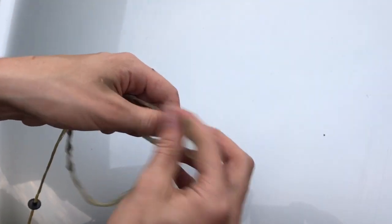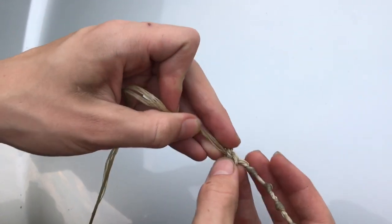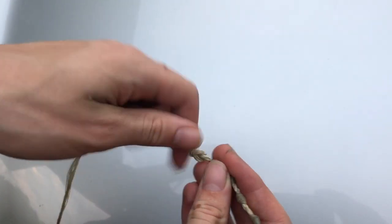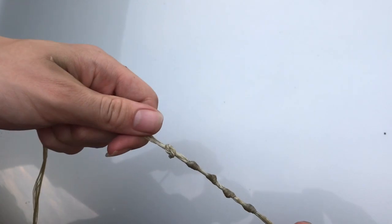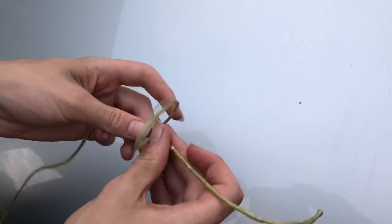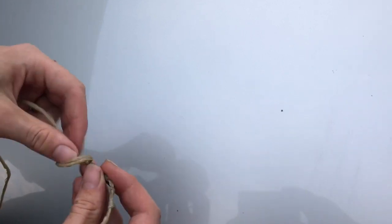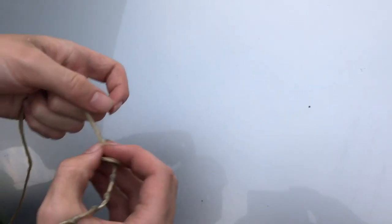Just a simple overhand knot will work, and I try to keep the knots equally spaced. They don't need to be equally spaced; it just looks a little better. Now take the other side of the string and place a knot there as well. Notice that this string is treated with natural beeswax to help preserve and keep the string strong.